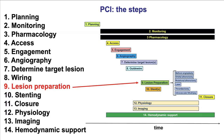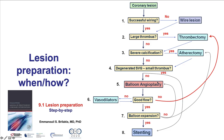Lesion preparation is the 9th of the 14 steps of PCI, and balloon angioplasty is the most commonly used modality for providing lesion preparation. In video 9.1 there was a detailed description about when to perform lesion preparation, but in summary, the vast majority of lesions should undergo lesion preparation with balloon angioplasty, with rare exceptions — for example, degenerated saphenous vein graft or vessels with small thrombus, where balloon angioplasty might lead to distal embolization.